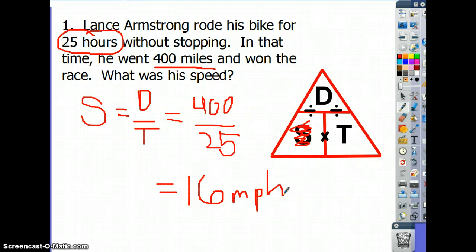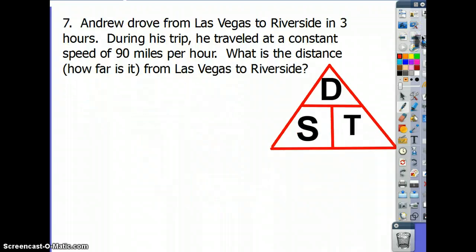Numbers 2, 3, 4, 5, and 6 are pretty much the same as number 1. But when you get to number 7, they're going to ask you for something different. Andrew drove from Las Vegas to Riverside in 3 hours. 3 hours is a time, just on two separate lines, so I'm going to circle it.